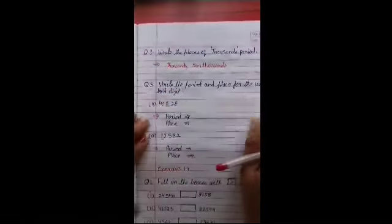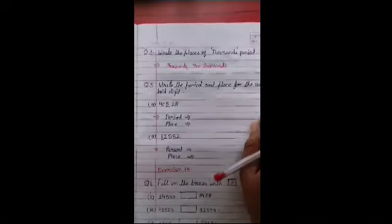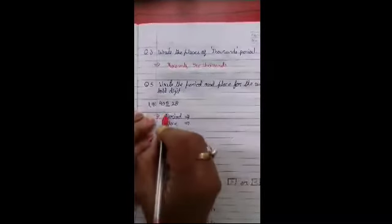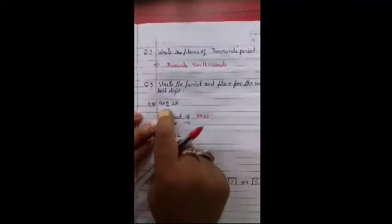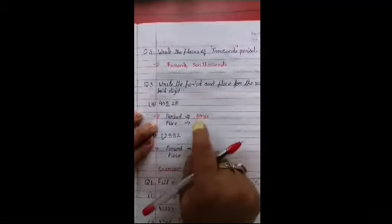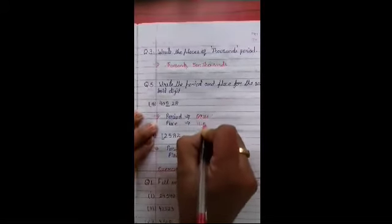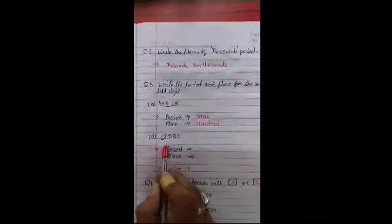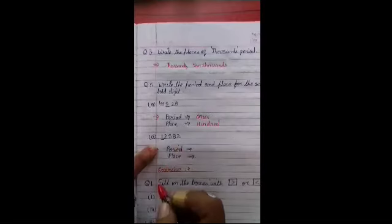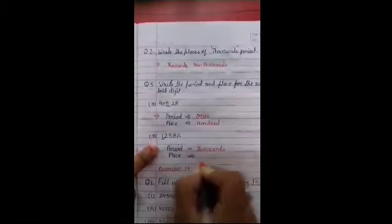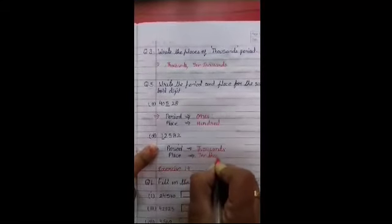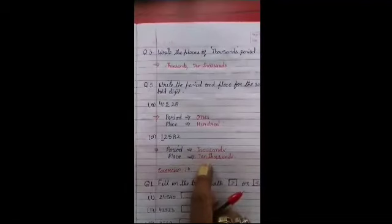Question number five. Write the period and places for the underlined bold digit. Yarni inka period bhi likhna hai aur inka places bhi humko likhna hai. Tho forty thousand five hundred twenty eight mein humko five ka period or place batana hai. Tho iska kya ho jayega period toh ho gaya - ye ones kya period mein aayega. Kyun? Kyunki hundred tens or ones kis mein aate hai? Ones ke group mein aate hai. Or place kitti hai uski hundred. Next, isi tarike se twelve thousand five hundred eighty two. Toh isme hai humko kis ki batani hai? One ki. Toh period toh kaunsa ho gaya. Ye thousand ho gaya. Ar place kya ho gaya? Ten thousand. Twelve thousand hai, isliye ye kaunsi place pe ho gaya one? Ten thousand ki place pe aaya.